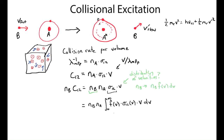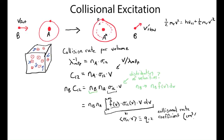This integral is a weighted average of the collisional cross-sections times velocity, weighted by the abundance of B particles at each velocity. We call this quantity Q_12 — the collisional rate coefficient — with units of volume per second. So the rate of transitions from state 1 to state 2 per volume is N_A times N_B times Q_12, where Q_12 is the weighted average over velocities of sigma(v) times v.